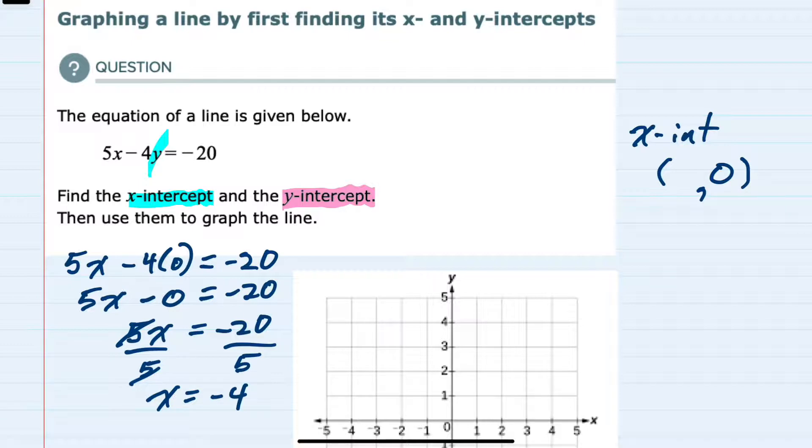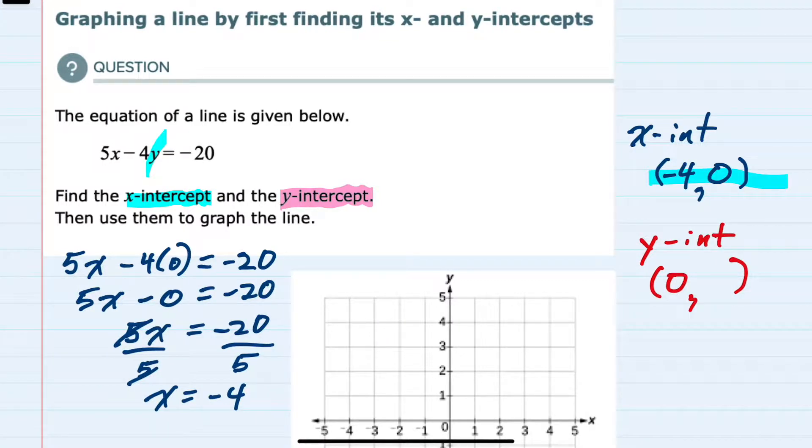So our x-intercept is negative 4, 0. And then for the y-intercept, where the line crosses the y-axis, we know that the x-value is 0.